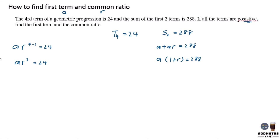So in this case, make A as the subject in terms of R. I take this as my equation 1, I take this as my equation 2. So I know that by applying 24 over R^3 to the A, I will have this.